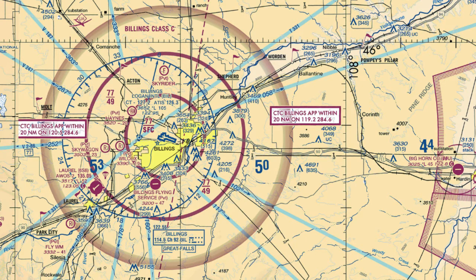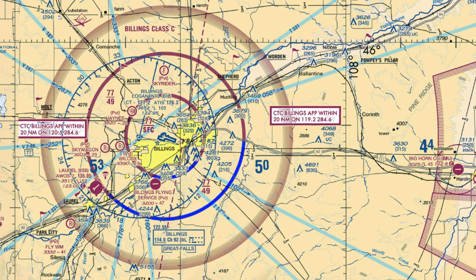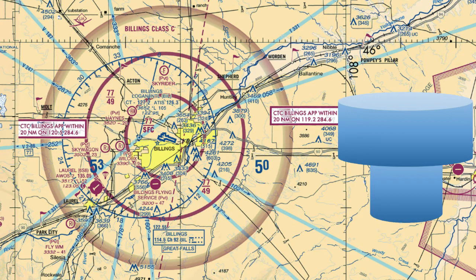For our Class Charlie airspace, we'll type in BIL and that'll take us to Billings Logan International Airport in Montana. On the chart, Class Charlie airspace looks like two dark magenta circles, one inside the other. In three dimensions, Class Charlie looks like an upside-down wedding cake. The inner circle is 5 nautical miles from the center of the airport and goes from the surface up to 4,000 feet AGL.